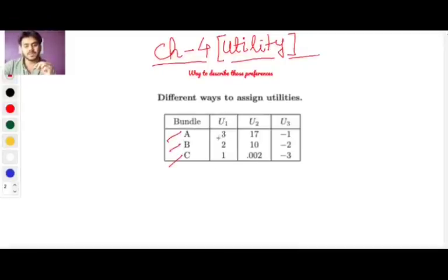3 is greater than 2, greater than 1. 17 is greater than 10, greater than 0.002. Minus 1 is greater than minus 2, is greater than minus 3. Which means the ordering is the same, only the numbers are different.